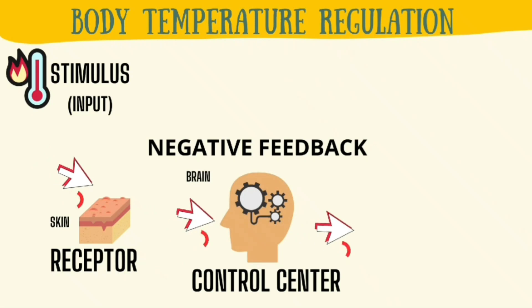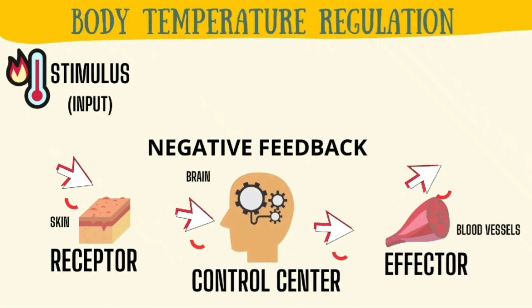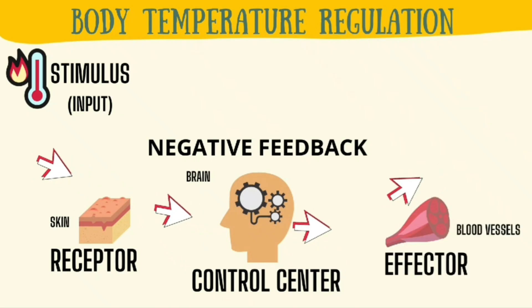On the other hand, when the temperature gets too high, the effectors include sweat glands and muscle tissue in arterioles, or blood vessels. The anterior hypothalamus tells the sweat glands to secrete sweat, which cools the body down by evaporative cooling. Furthermore, arterioles are dilated in order to increase blood flow to the skin, resulting in the loss of heat — also known as vasodilation.